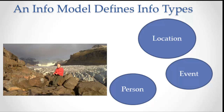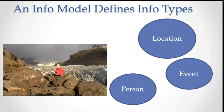They want to have information about locations, for example. There's lots of locational information in Facebook, and maybe they want to have information about events. You can see of the three which one is absolutely the most important, and that's the people — that's what makes Facebook go around. So very loosely, Facebook wants to define three kinds of information, three information types: people, locations, and events.